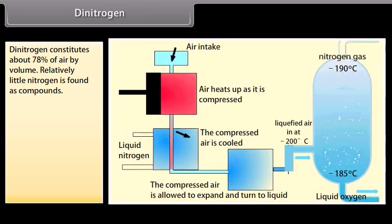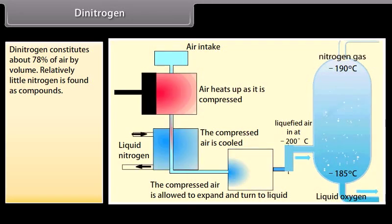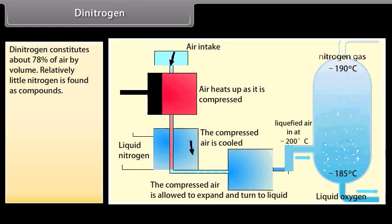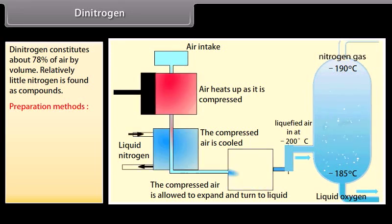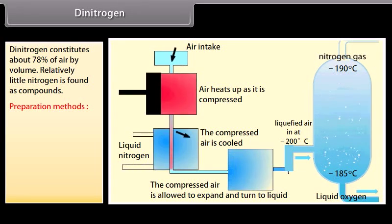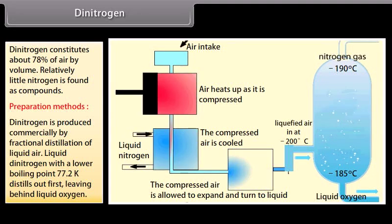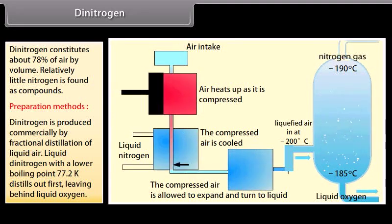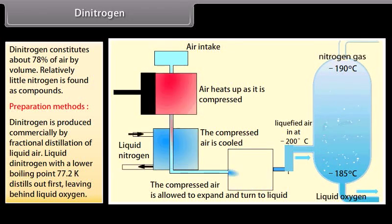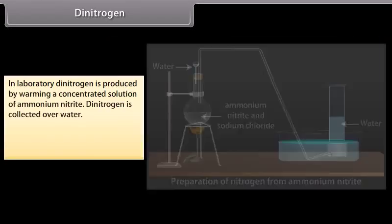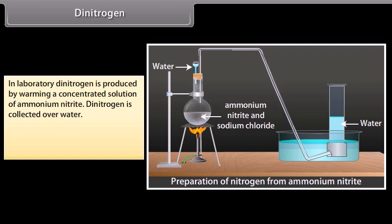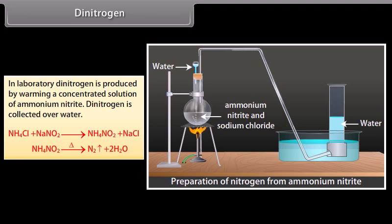Dinitrogen constitutes about 78% of air by volume. It is produced commercially by fractional distillation of liquid air; liquid dinitrogen, with a lower boiling point of 77.2 Kelvin, distills out first, leaving behind liquid oxygen. In the laboratory, dinitrogen is produced by warming a concentrated solution of ammonium nitrite, and is collected over water.